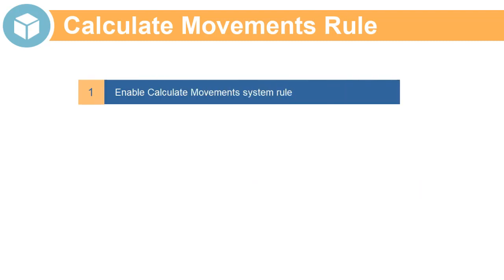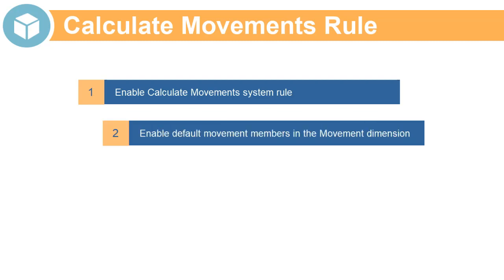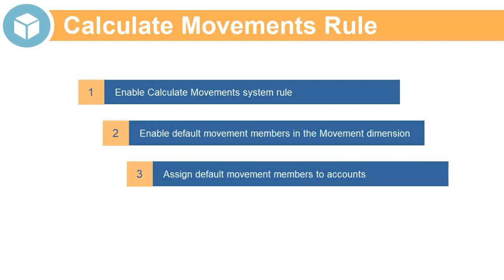To configure a calculation of movements from closing balance input, you enable the Calculate Movements system rule, enable default movement members in the movement dimension, and assign default movement members to accounts.